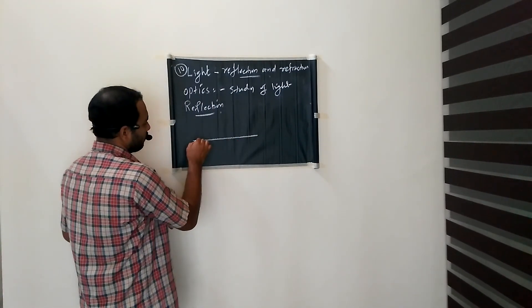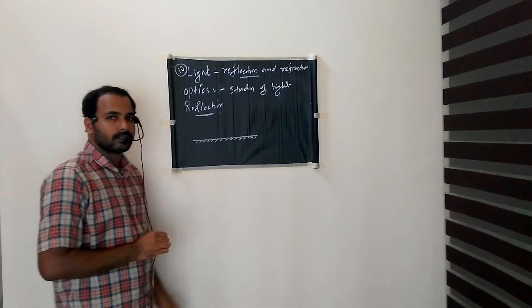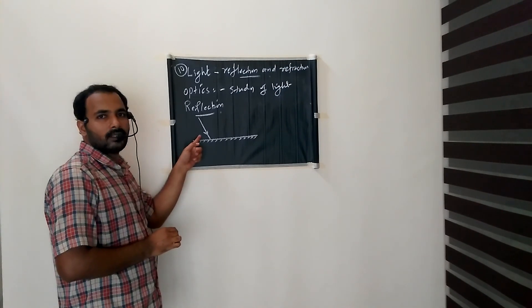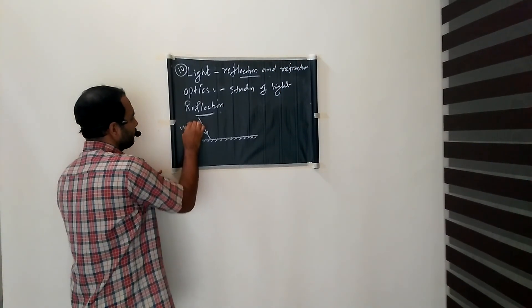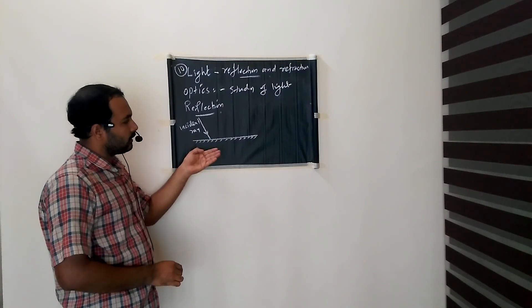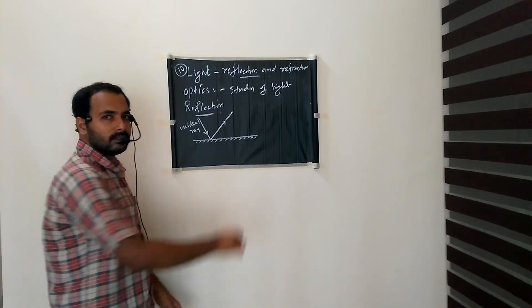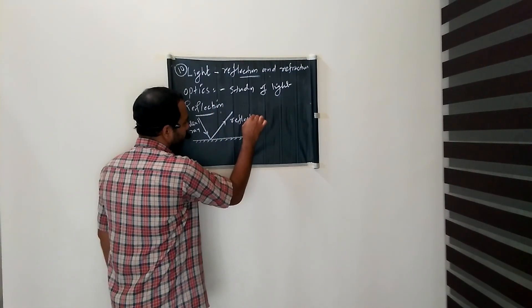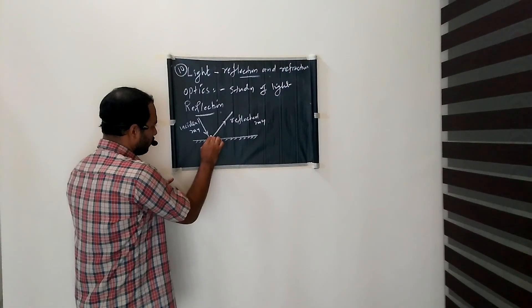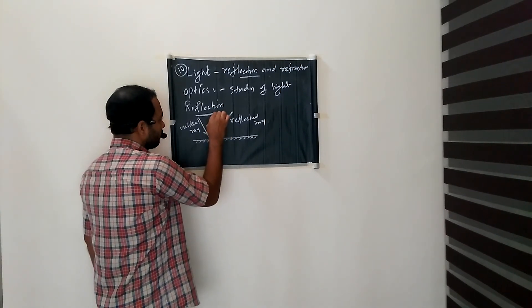For example, if light falls on a smooth surface, that ray is called the incident ray. When it falls on a smooth surface it reflects or rebounds — this ray is called the reflected ray. We then draw a perpendicular or normal from the point of incidence; this line is called the normal.